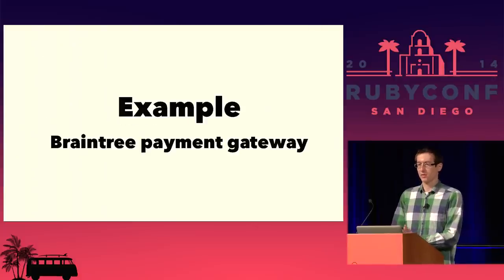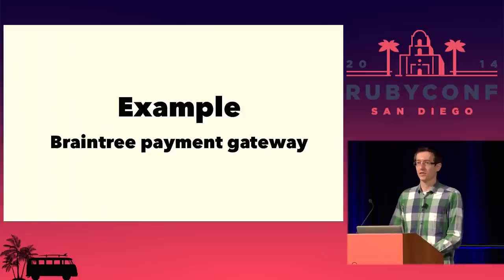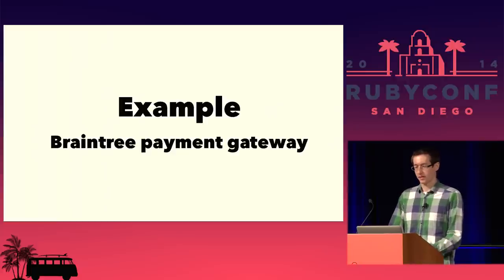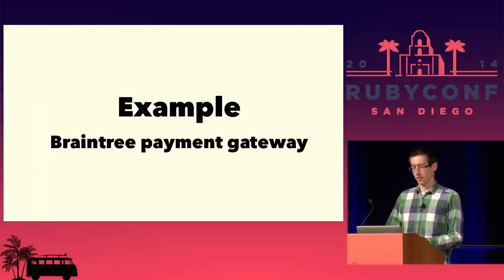Next example: I work for Braintree. We are a payment gateway — if you want to accept payments online or in a mobile application, you would integrate with us. You'd send us your credit cards and payment info; we vault them, return tokens, and then you charge against those tokens. We're also a multi-tenant system. We call them merchants — lots of different companies integrate with us and we keep all their data separate in their own logical vaults.